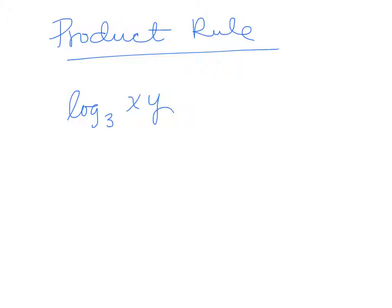So the product rule says if you have the log of a product, you can separate that, and each one gets its own statement: log base 3 of x, log base 3 of y. Notice they each get base 3, so each one keeps the base 3, and you add the two together.